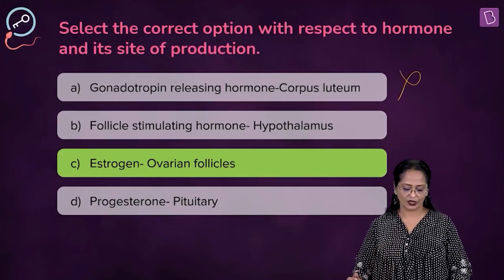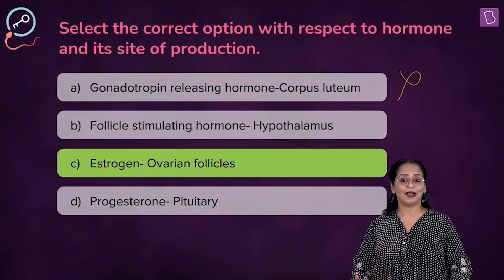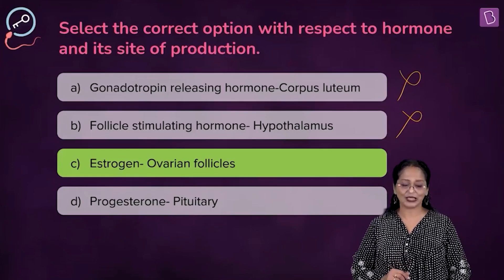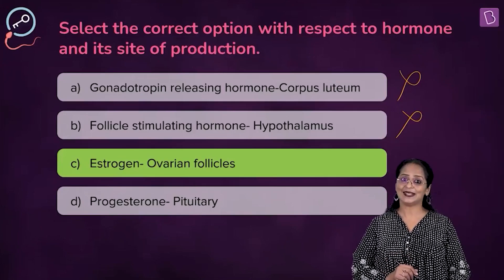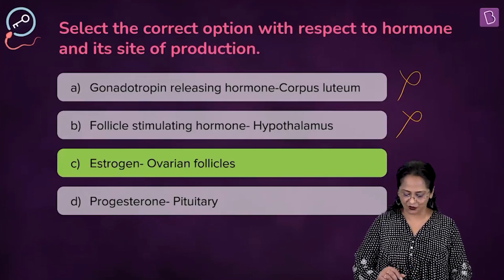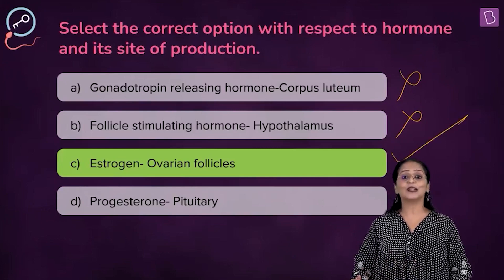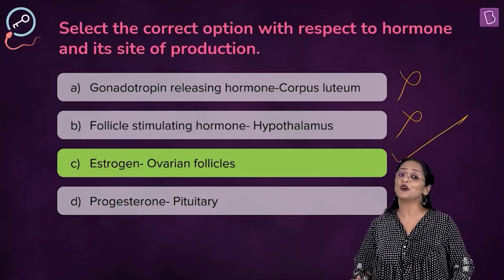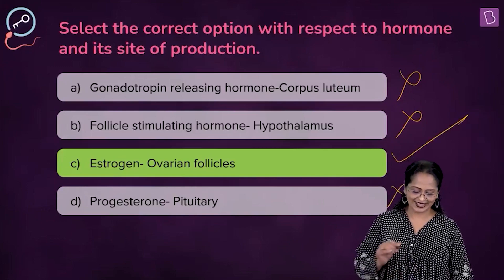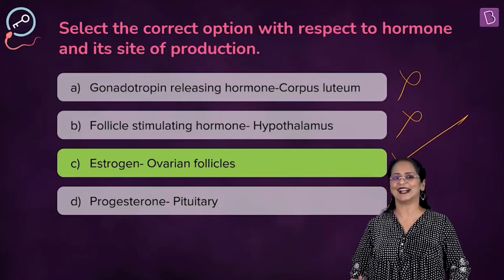For this question — select the correct option with respect to hormone and its site of production: gonadotropin-releasing hormone is secreted by the hypothalamus, so A is wrong. FSH is secreted by the anterior pituitary gland, so B is wrong. Estrogen is secreted by the ovarian follicle — C is right. Progesterone is secreted by the corpus luteum, not the pituitary, so D is incorrect. C is the right answer.